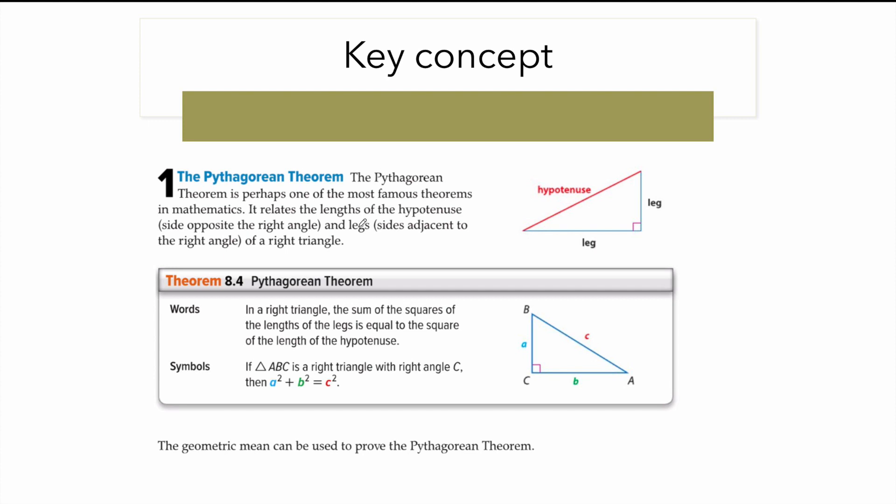Let's look at the key concept of what is the Pythagorean theorem. I'm not going to read this whole passage, if you want to read it you can pause the video and read it. But basically Pythagorean theorem is about the relationship between the hypotenuse and the legs of a right angle triangle.